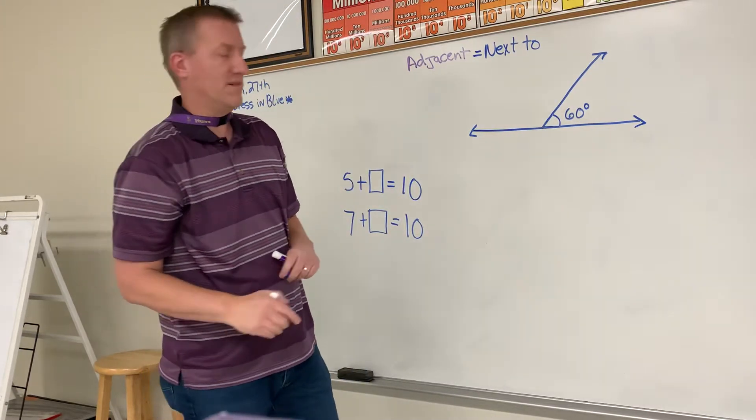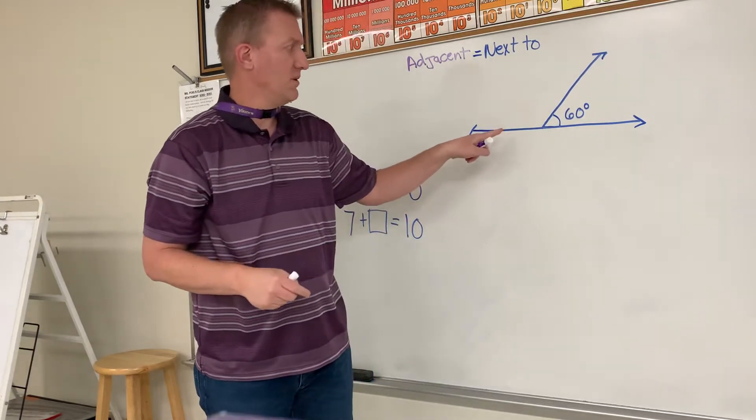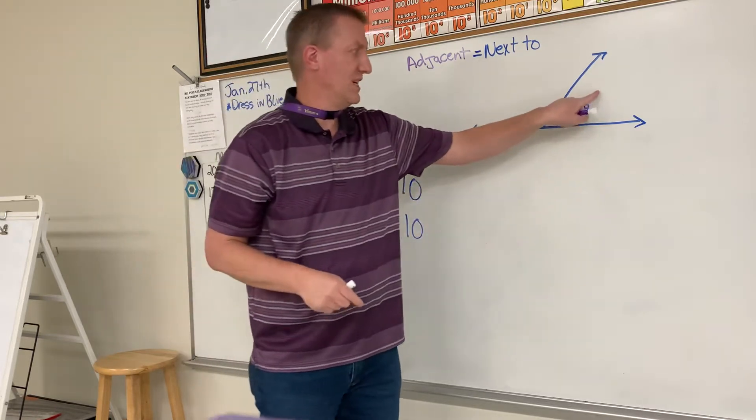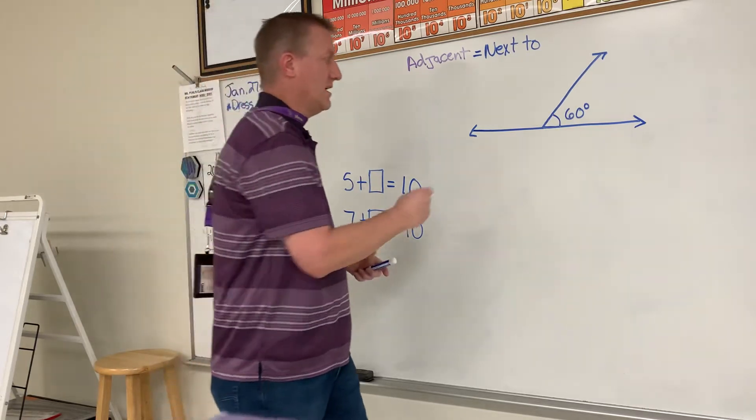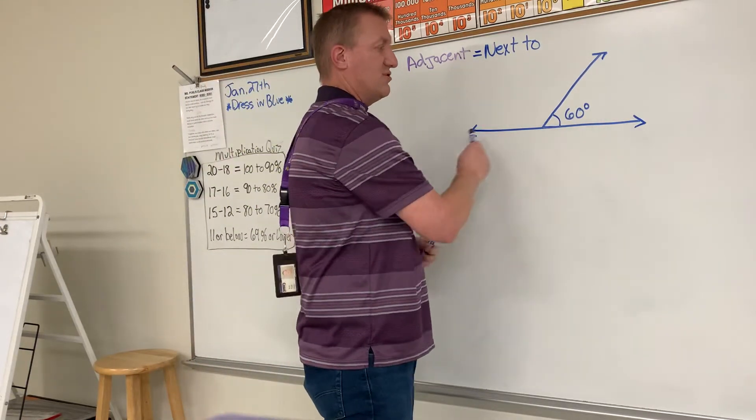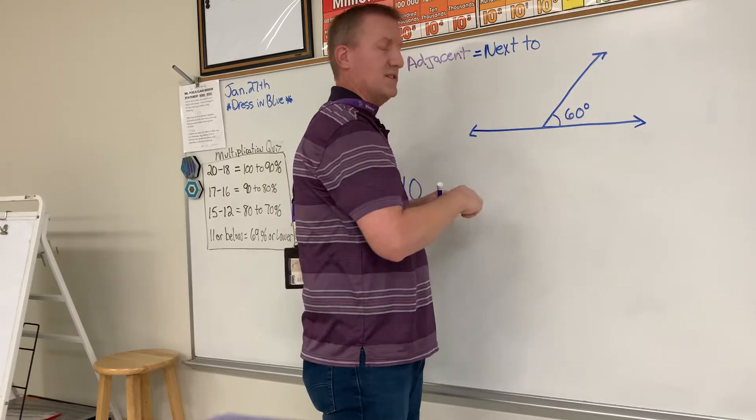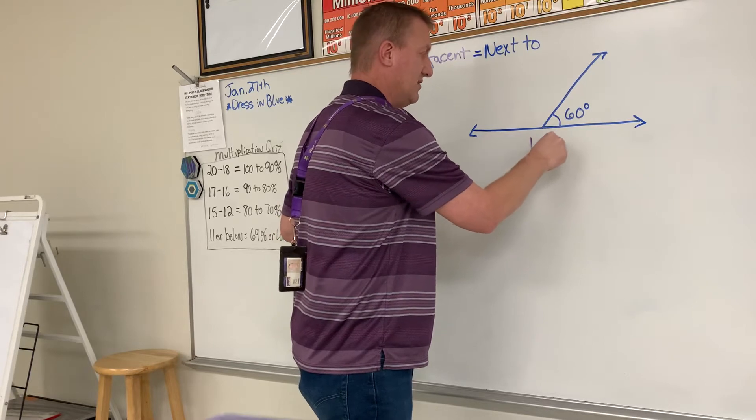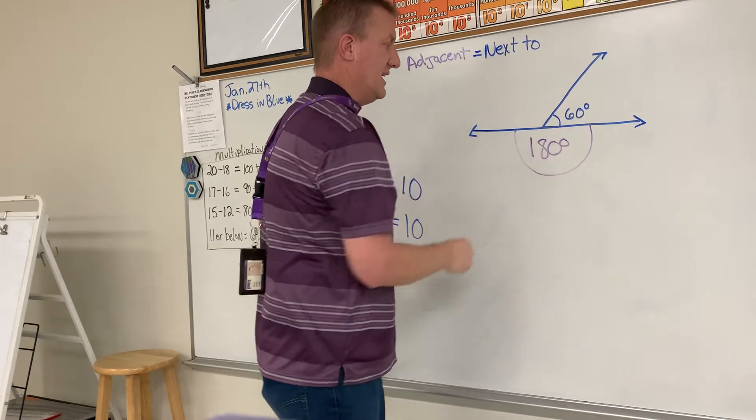So you might say, well how can we figure out this angle if we know the adjacent angle? Okay, this is how you can figure it out. All right, so you know a straight angle, this straight angle right here is 180 degrees. From here to here is 180 degrees.